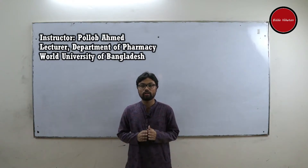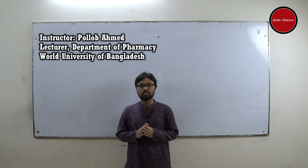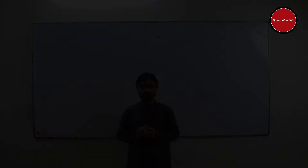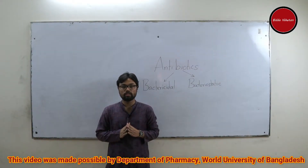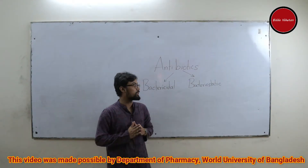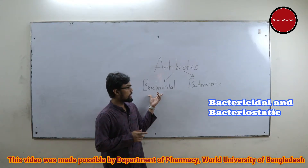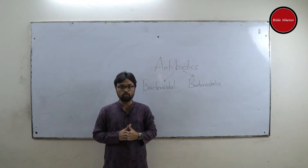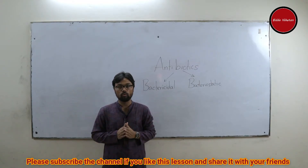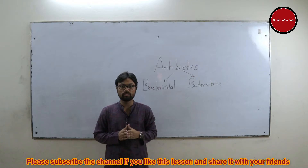Drugs which kill or slow down the growth of bacteria are called antibiotics. Antibiotics can be divided into two classes, namely bactericidal and bacteriostatic. The bactericidal drugs are those which kill bacteria, while the bacteriostatic drugs inhibit their growth.